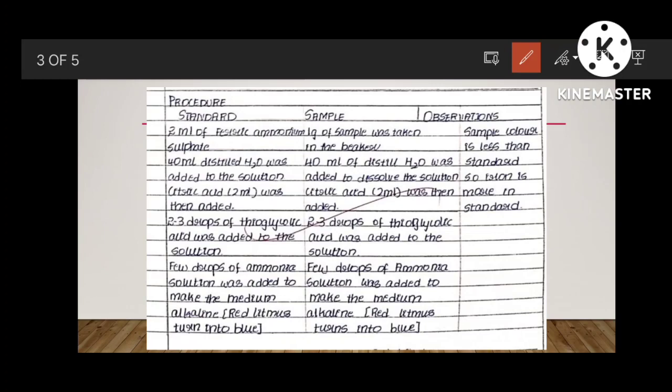Sample color is less than standard, so iron is more in standard. How can you say the limit test passes for iron? You have to observe the color. Always remember, standard should show greater color than the test or sample, then only your limit test passes. If the test shows greater purple color or greater light brown color, then your limit test fails. Standard will show greater color or opalescence. In this limit test of iron, the color is dark purple color. This is one of the main reports you have to write down.